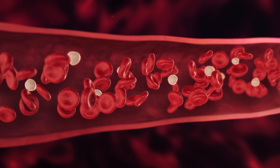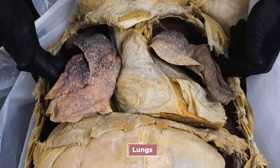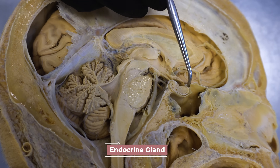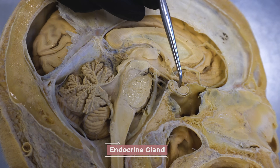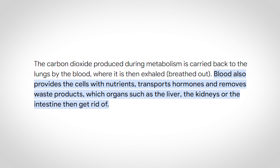Those are some indirect functions of blood, but what are the more direct functions? Blood is involved in quite a bit of transportation. It transports oxygen from the lungs to the body's cells and carries carbon dioxide from those cells back to the lungs for exhalation. It carries nutrients from the gastrointestinal tract to the body's cells and delivers hormones from endocrine glands to various targets throughout the body. Blood also transports waste products to the lungs, kidneys, and skin for elimination.